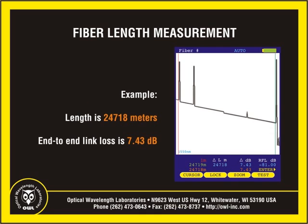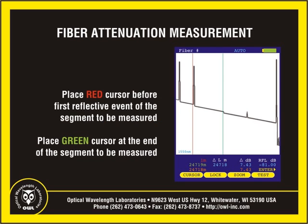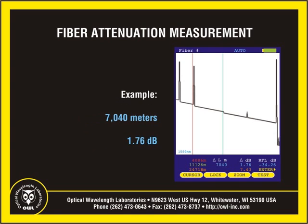In this example, the total link length is 24,718 meters and the end-to-end link loss is 7.43 dB. The fiber attenuation of certain sections of an optical fiber link can be determined by placing the cursors on the backscatter slope at the beginning and ending points of the section to be measured. In this example, this section of fiber has 1.76 dB of loss and is 7,040 meters long. Using this information, the dB per kilometer can be calculated and compared to the fiber manufacturer's attenuation specification.